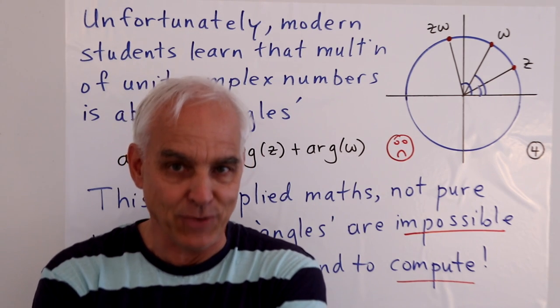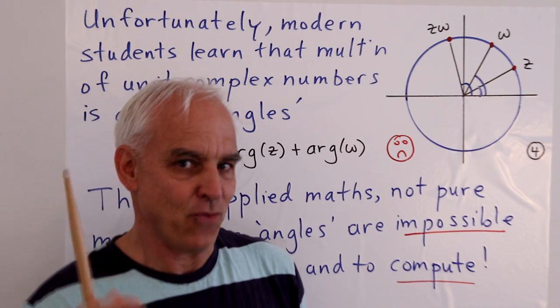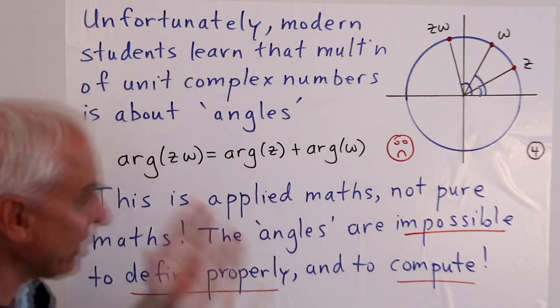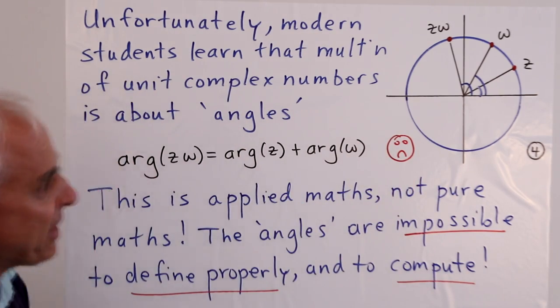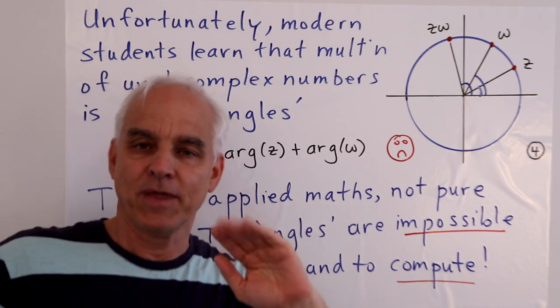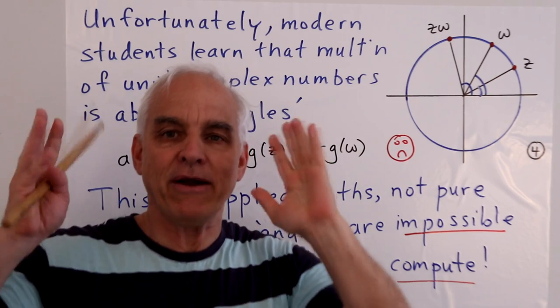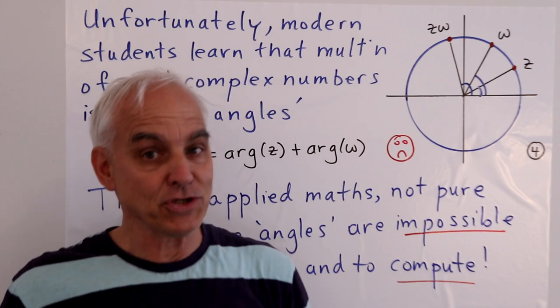At UNSW, we do this as well, unfortunately. But as the 21st century rolls on, things are going to be changing. But currently, we do the following old-fashioned thing. We say that it all has to do with angles. That when you're multiplying complex numbers on the unit circle, it's a question about adding angles. This is what students actually learn. It's very unfortunate.